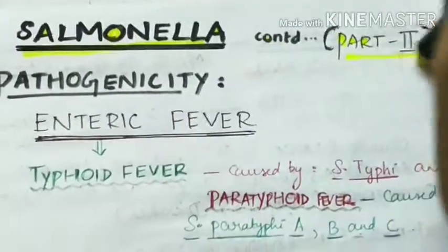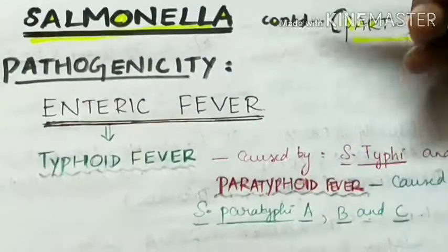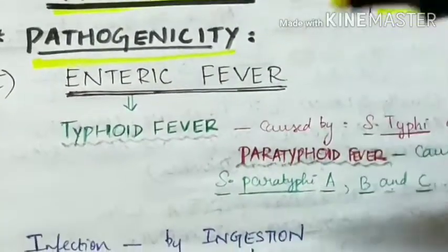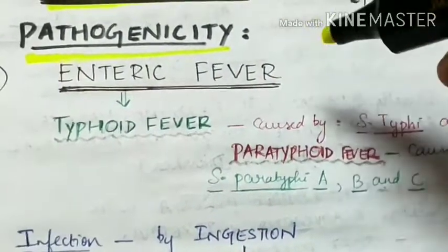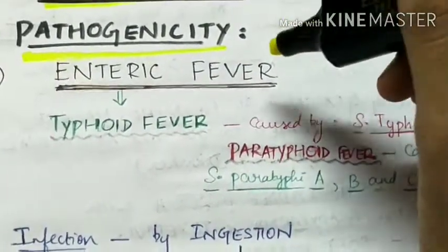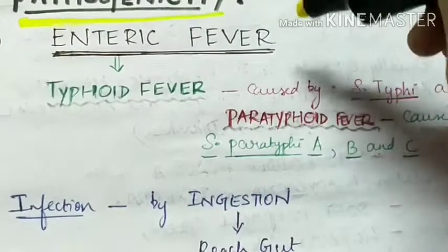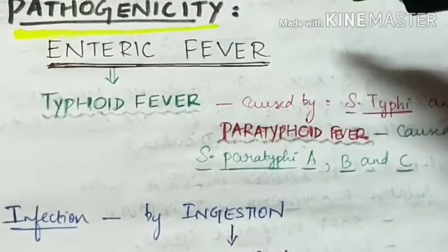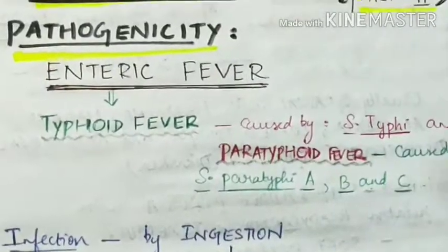Salmonella part 2. Let's see about the pathogenicity of Salmonella. It causes three main diseases: enteric fever, Salmonella gastroenteritis, and septicemia caused due to Salmonella.